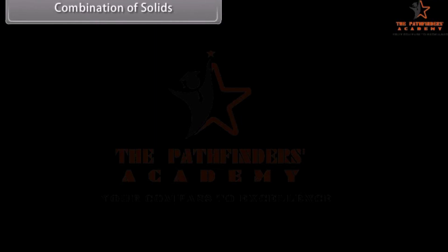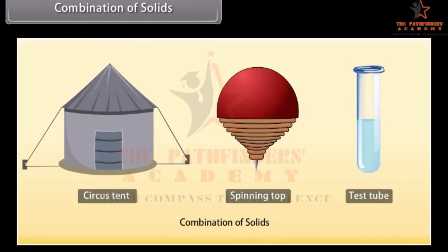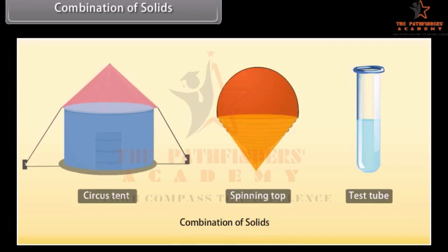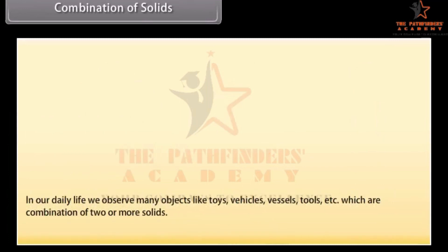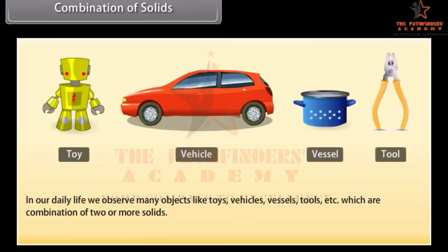Students, look at these solids. These solids are made up of two or more solids. A circus tent is a combination of a cone and a cylinder. A spinning top is a combination of a hemisphere and a cone. And a test tube is a combination of a hemisphere and a cylinder. In the same way, in our daily life we observe many objects like toys, vehicles, vessels, tools, etc., which are a combination of two or more solids. Let's learn to find their surface areas and volumes.